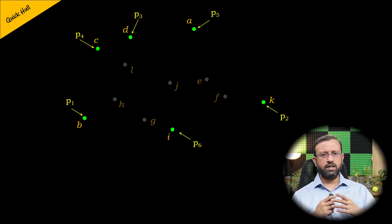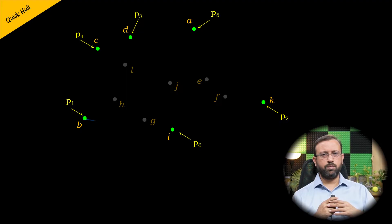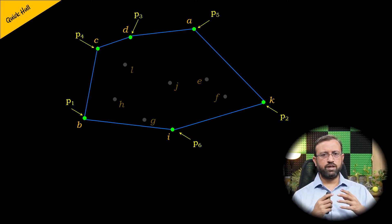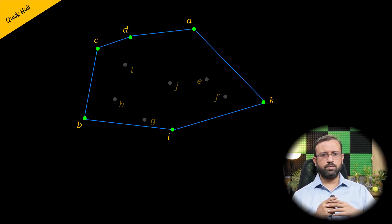At this stage we have computed the convex hull for both the upper hull and the lower hull. The points P1, P6, P2, P5, P3, and P4 are the points of the convex hull, and this is how the convex hull is computed using the quick hull algorithm.